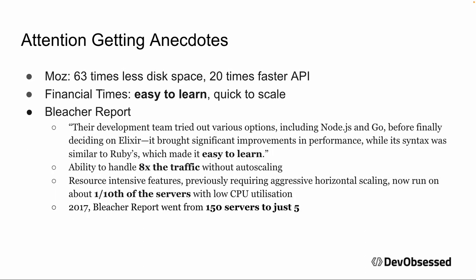There's more companies running 20 times faster. Some companies say they converted from their old system to Elixir and Phoenix, and it was easy to learn — and I'm like, wait, that's a functional programming language, most people don't say 'easy to learn' in that sentence. Bleacher Report tried Node, tried Go before they went to Elixir. And the one that got me was they dropped their cloud footprint from 150 servers to five when they went from Ruby on Rails to Elixir. You just can't ignore that.